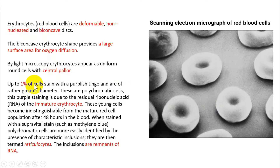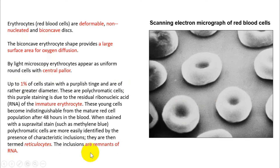Around one percent of cells in the periphery are immature erythrocytes — we call them reticulocytes. They contain inclusions that are remnants of RNA. This is basic knowledge; you just need to know the terminology. One percent of peripheral red blood cells are immature erythrocytes called reticulocytes.